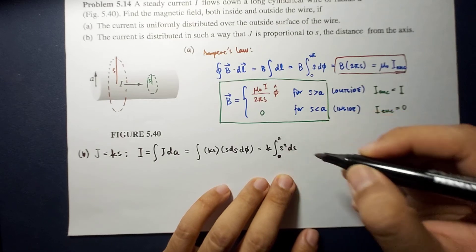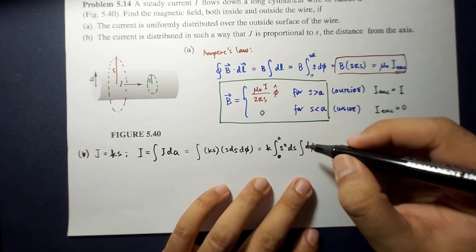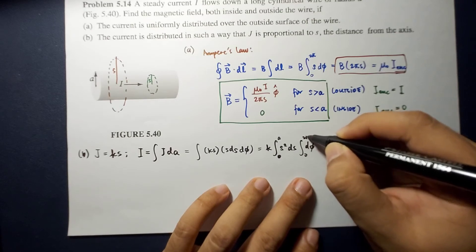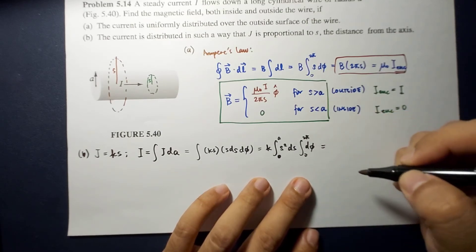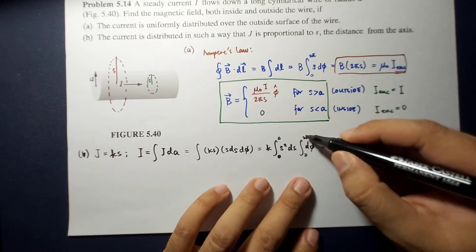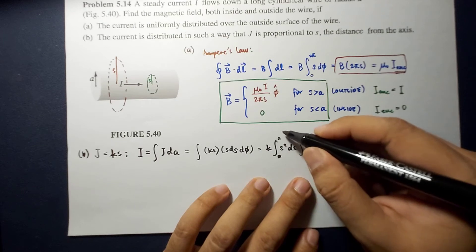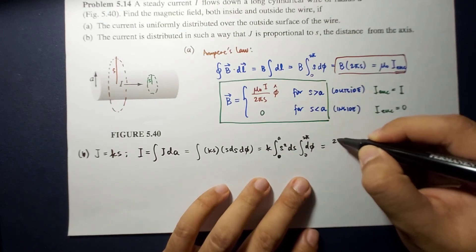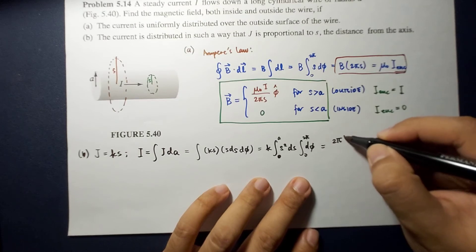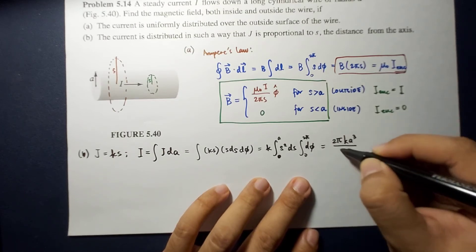So, this is 0 to A, times integral of dV. It's from 0 to 2 pi. And the result here is what? This is 2 pi. This is S cubed over 3, evaluated from 0 to A. So, that's A cubed over 3 times K. So, the end result is 2 pi K A cubed over 3.